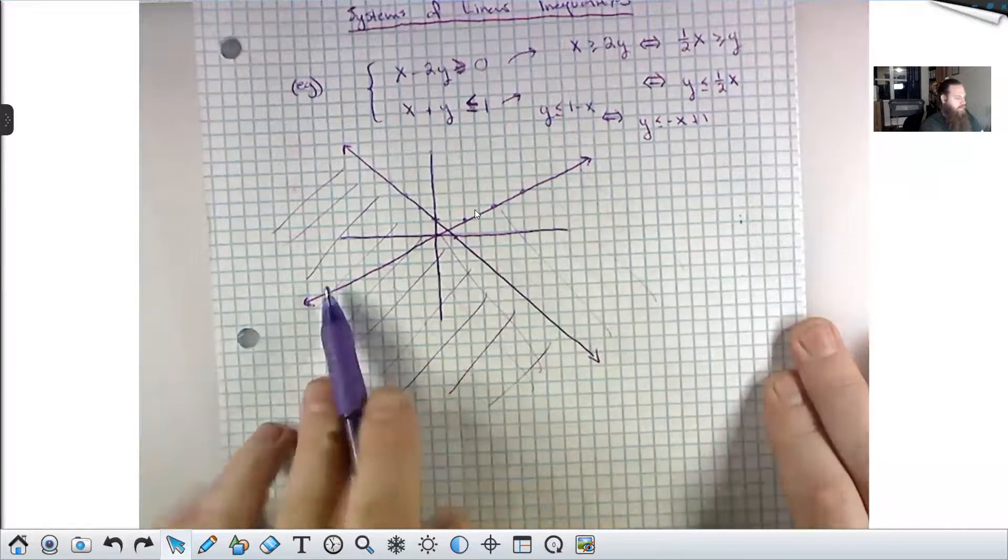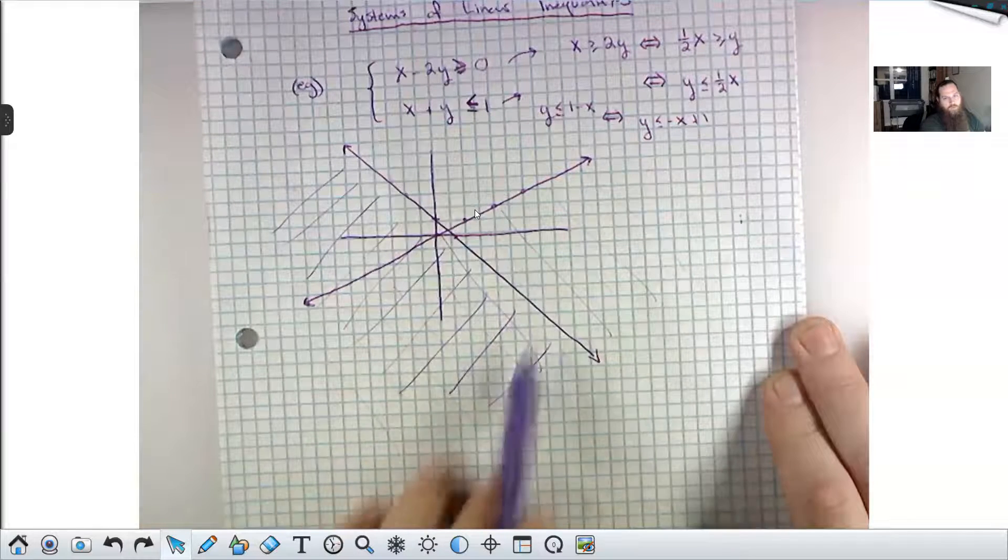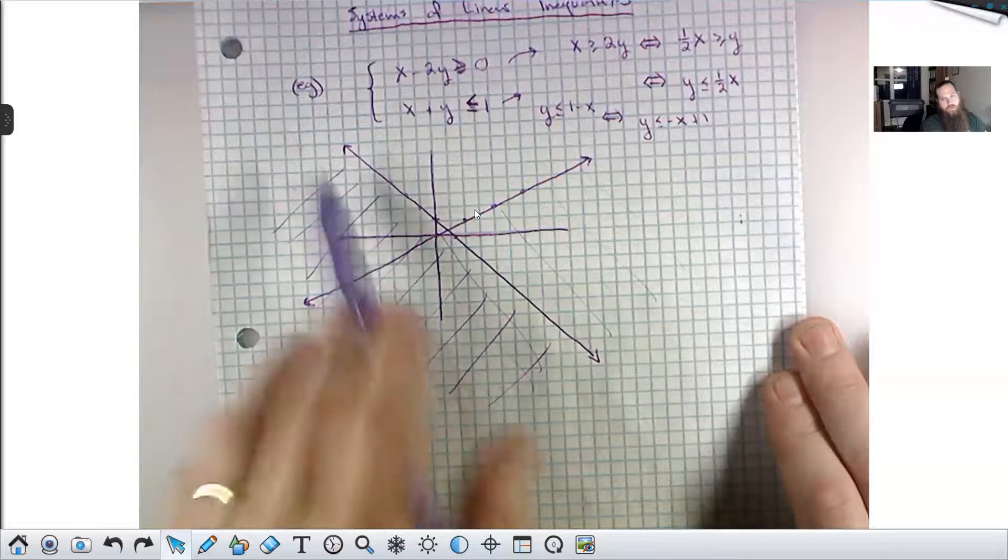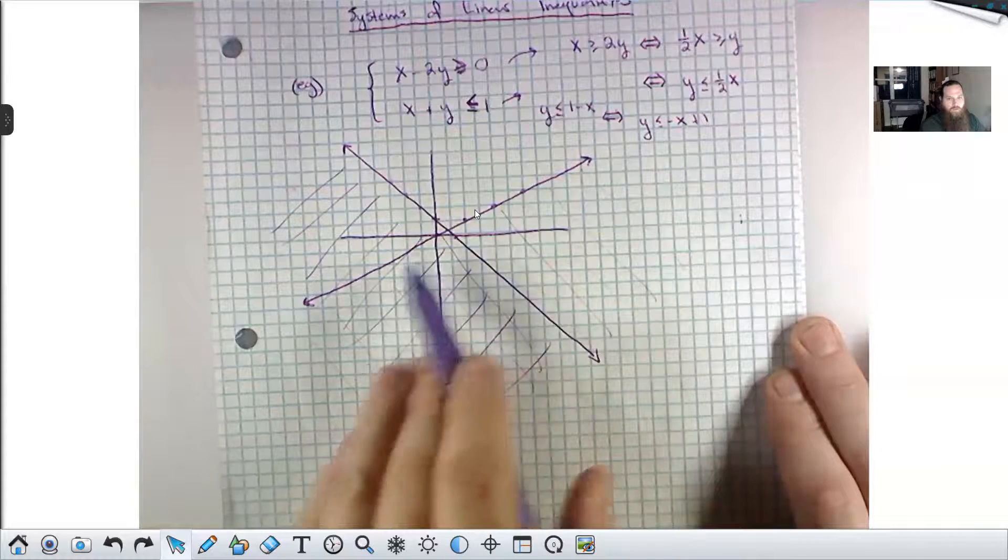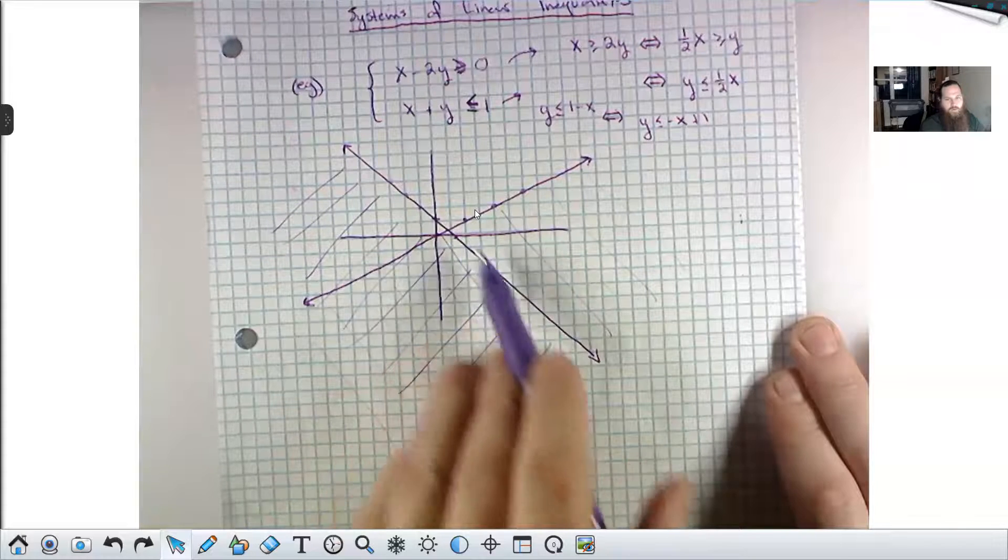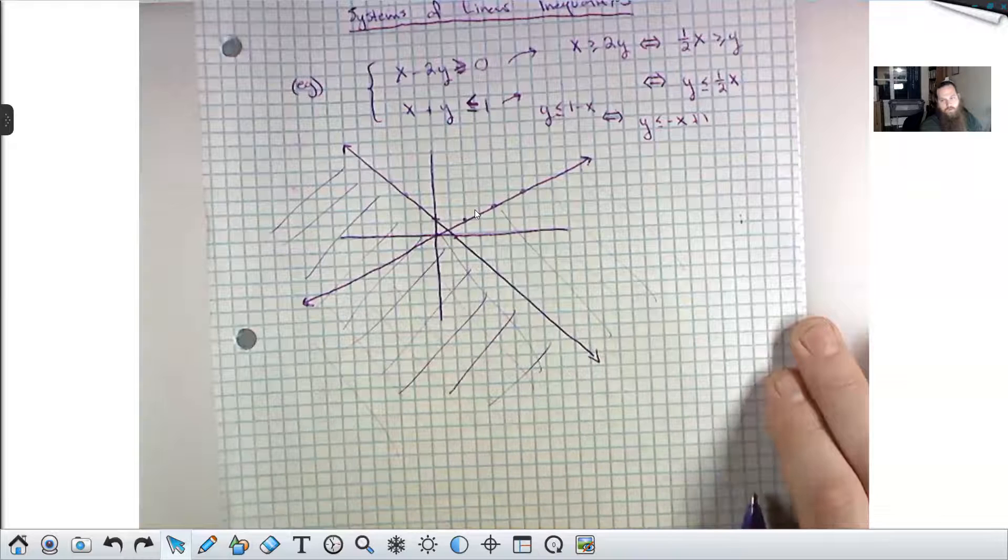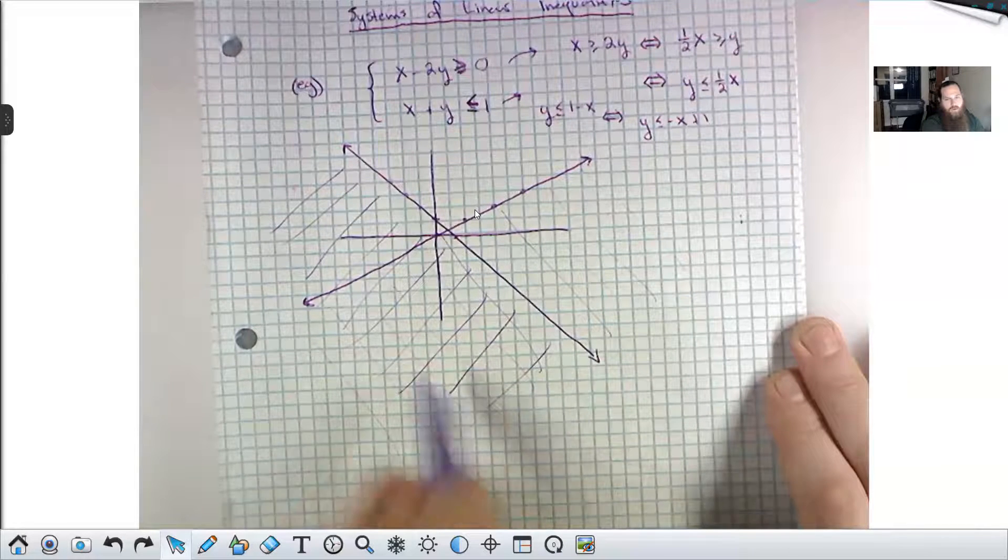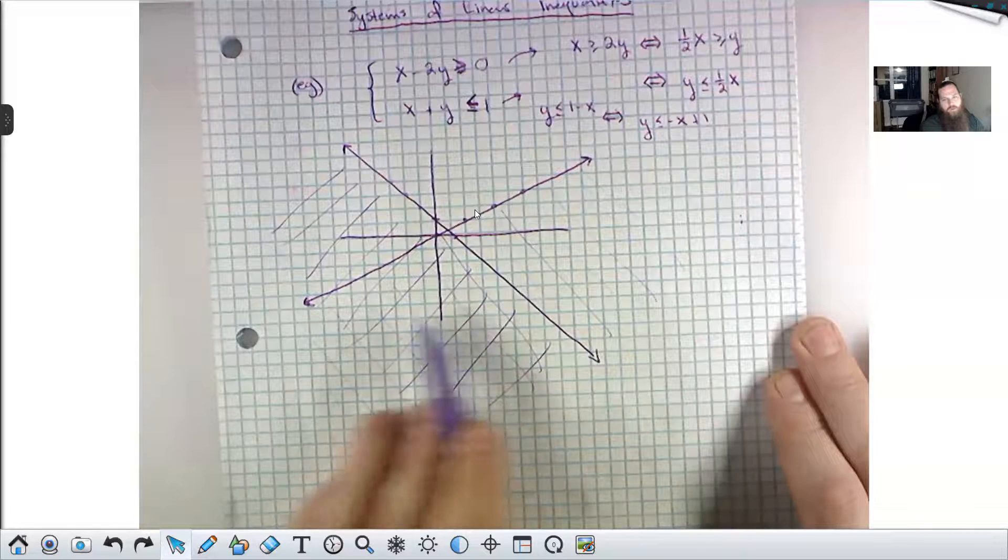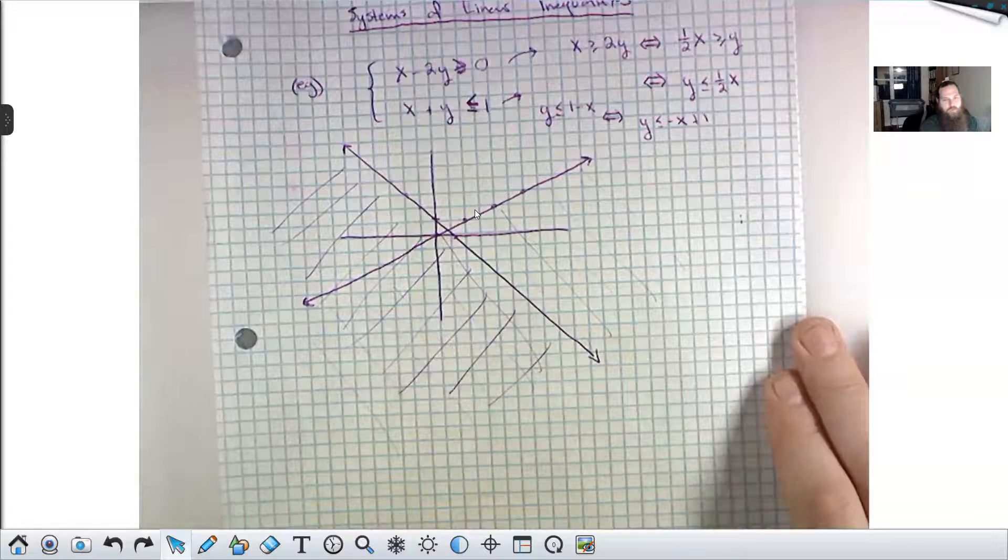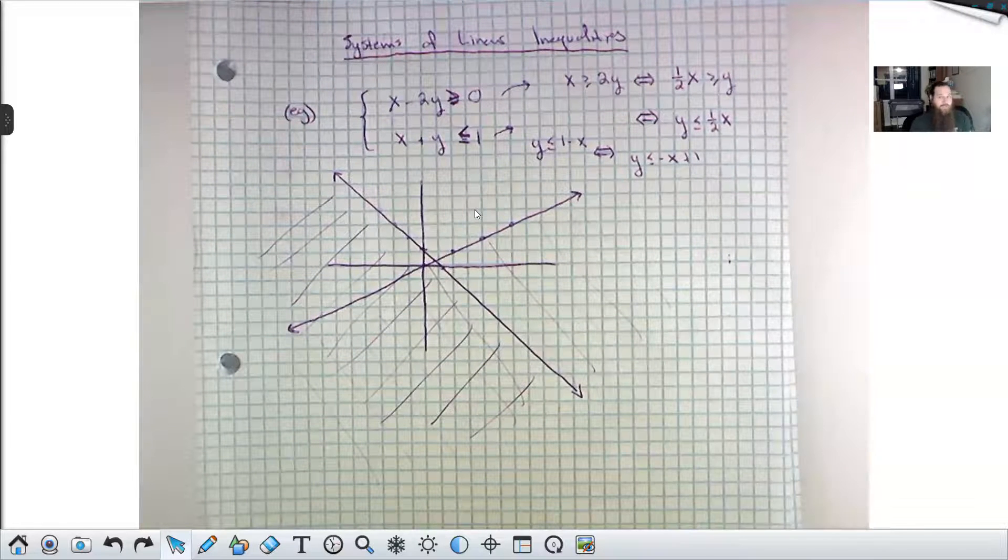So here's inequality one and its shaded region. Here's inequality two and its shaded region. The cross-hatched area, this region, the region that's beneath both of them, that's the solution space here. And that's it. That's really it.